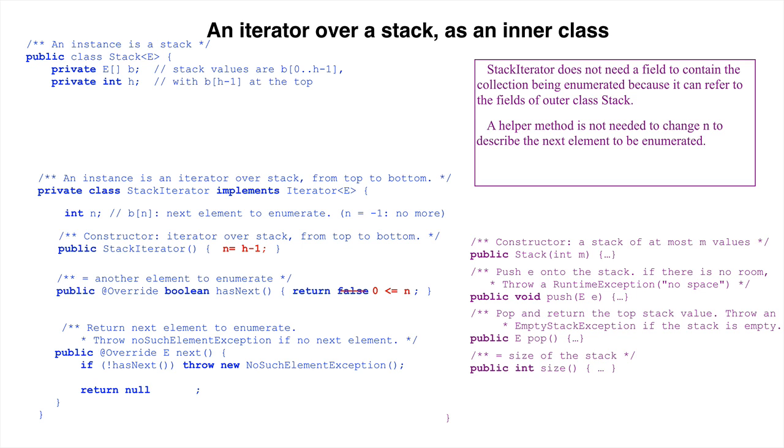Then we complete method Next. It already throws the necessary exception if there are no more elements to enumerate. Because of the simplicity of determining the next element to iterate, we can make the body of Next much simpler than usual.